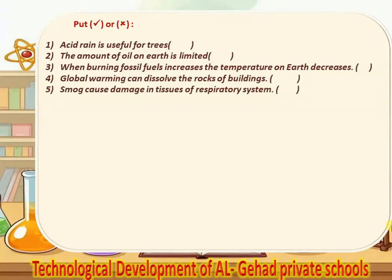True or false. Number 1, acid rain is useful for trees — False. Number 2, the amount of oil on earth is limited — True. Number 3, burning fossil fuels increases the temperature of the earth — False. Number 4, global warming can dissolve the rocks of buildings — False. Number 5, smog causes damage in tissues of the respiratory system — True.